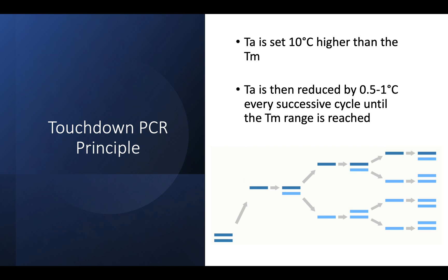Once and then, the annealing temperature is reduced by half a degree to one degree Celsius every successive cycle until the melting temperature of the primer is reached. And this is done for about 10 to 15 cycles. After the end of these 15 cycles, the target sequence will have undergone several cycles of amplification and then it will become the dominant product of the PCR reaction.